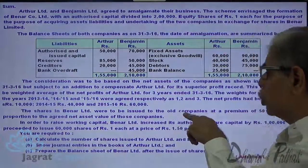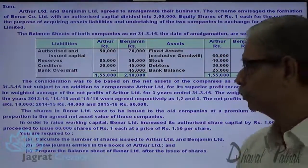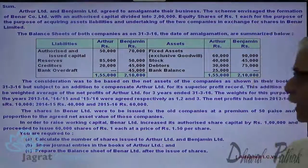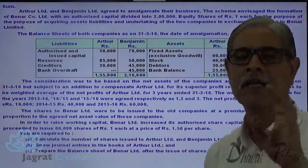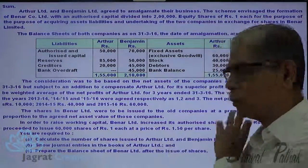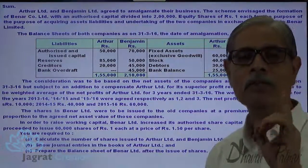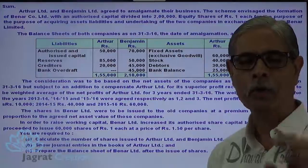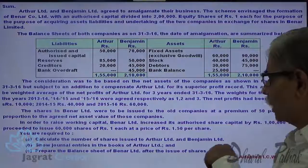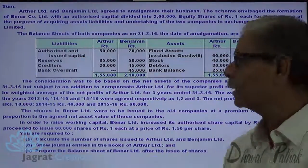Shares in Banner Ltd. were issued to both companies at a premium of 50 paisa per share, in proportion to the agreed net asset value of those companies. To raise working capital, Banner Ltd. increased its authorized share capital by Rs. 1,00,000 and proceeded to issue 60,000 shares of Rs. 1 each at a price of Rs. 1.50. We are required to calculate the number of shares to be issued to Arthur Ltd. and Benjamin Ltd., show journal entries in the books of Arthur Ltd., prepare the shareholders account, realization account, and prepare the balance sheet of Banner Ltd. as per Schedule 3.